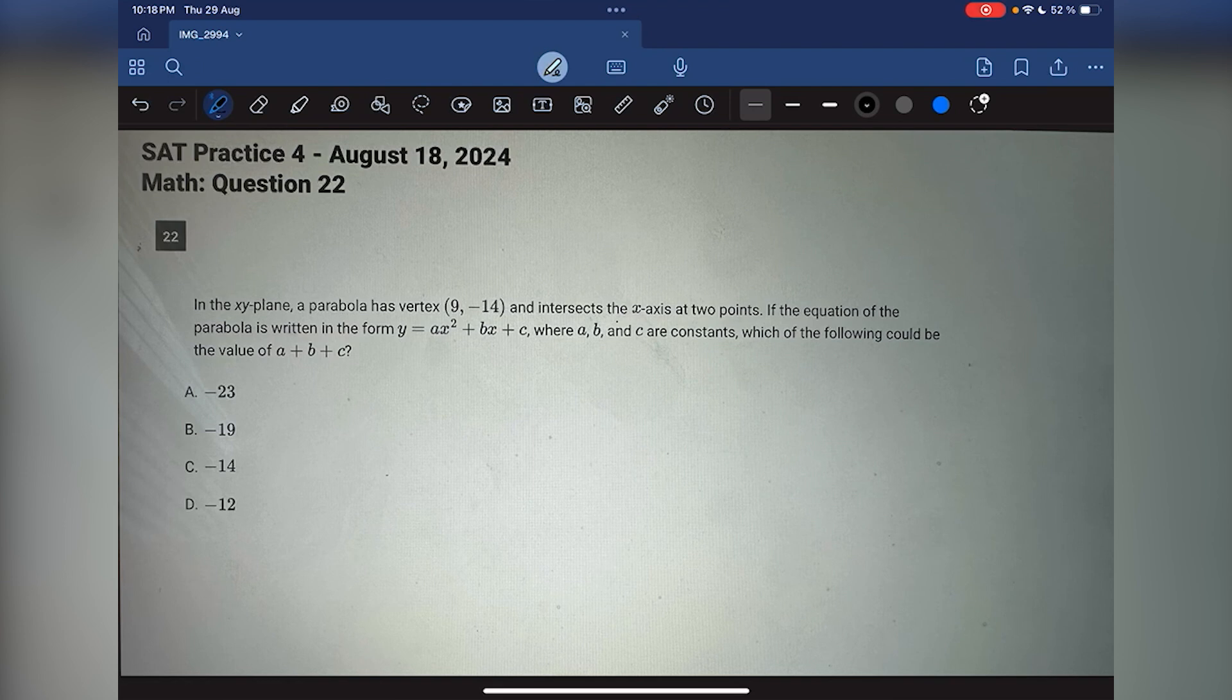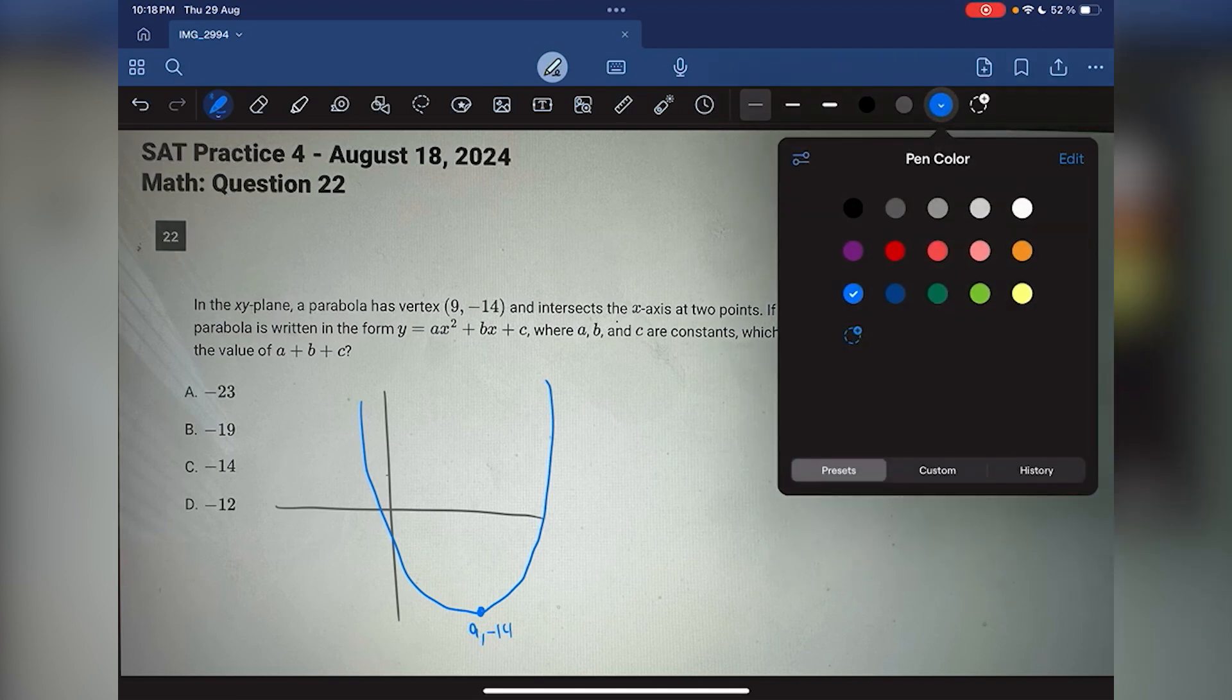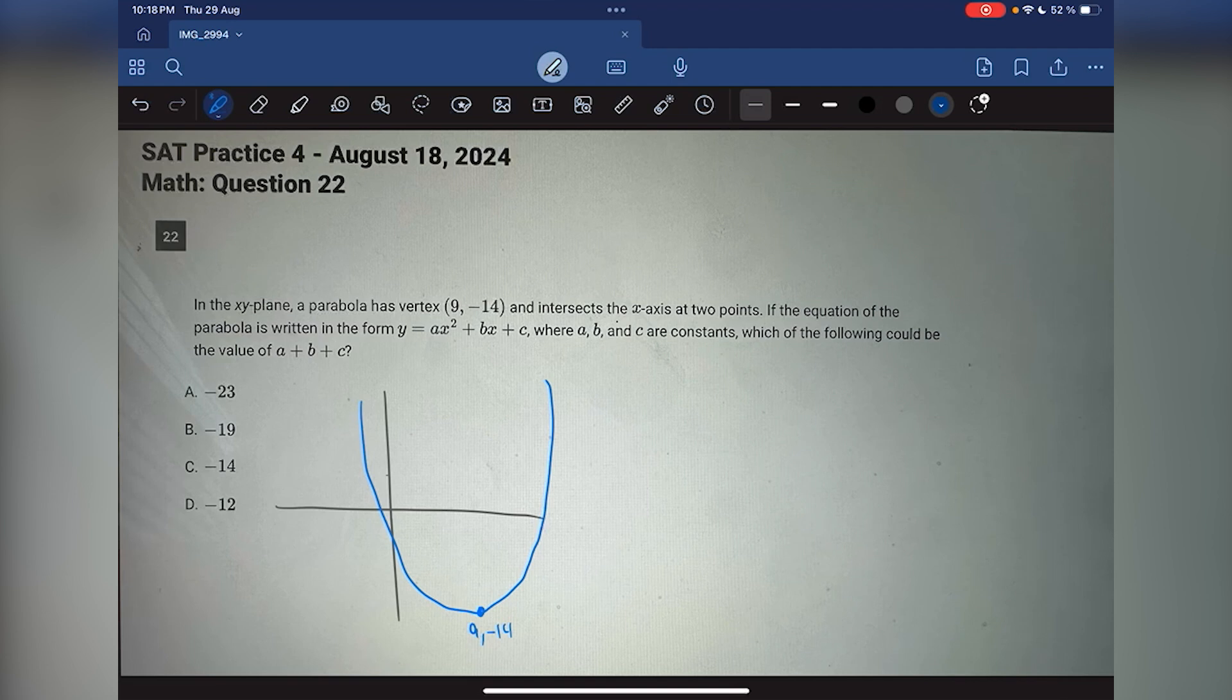In the xy-plane, a parabola has a vertex 9, negative 14 and intersects the x-axis at two points. I'm just going to draw that out here. So we have a visual. Let's say the 9, negative 14 is right here. And it says it intersects the x-axis at two points. So since we know the parabola is upward facing since it intersects the x-axis at two points, we actually also know the value of a. Well, not exactly the value, but we do know that a is greater than 0, which is very important. So just remember that.